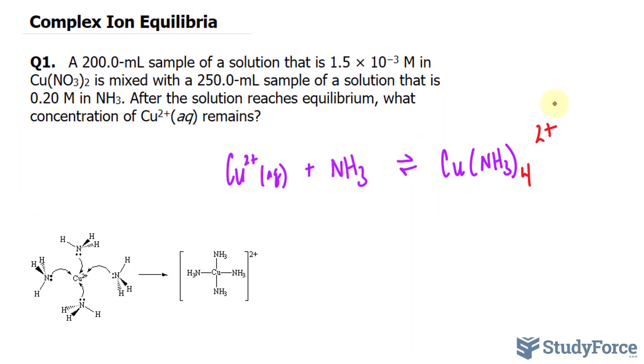Because we have this product forming, we need to put a coefficient of 4 in front of NH3. Now, because this is an equilibrium problem, I'll create an ICE table showing the initial, change, and equilibrium concentrations of each molecule. So I'll write down I, C, E.